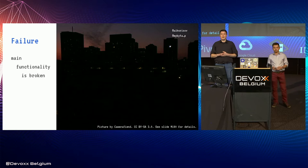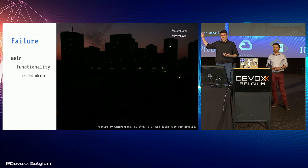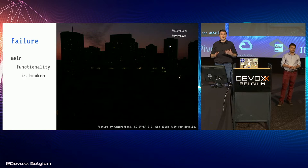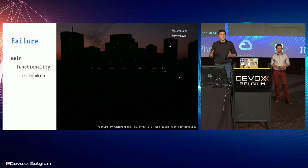A failure is when a system doesn't work — it may be unreachable, unresponsive, or something else. The bottom line is the same: your main functionality is broken. You're facing a blackout. It's like in 2003 when 55 million people lost power because of some trees hitting power lines. So a fault like that can cause an error, and an error can lead to a failure, sometimes a catastrophic one.